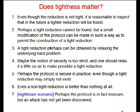Almost no one talks about the nightmare scenario: perhaps a protocol is in fact insecure, but an attack has not yet been discovered. As cryptographers, your work is necessarily conservative and hopefully somewhat paranoid. So you design your protocol, try hard to prove it secure, your proof is non-tight, you try hard to get a tighter proof, and you fail. I think your conservative and paranoid nature must lead you to conclude: I can't make this proof tighter because there exists an attack I haven't found yet.